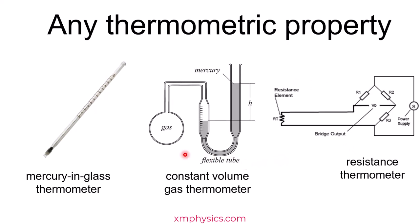The mercury in glass thermometer is not the only thermometer. In fact, you can use any thermometric property of any substance as long as it varies with temperature.